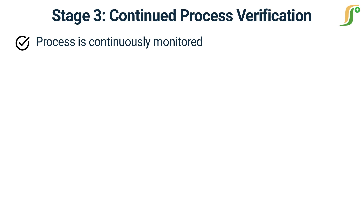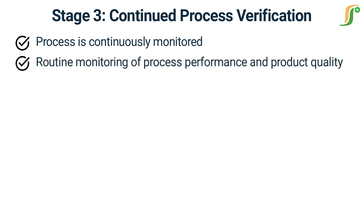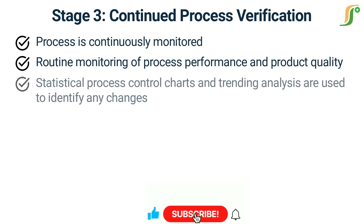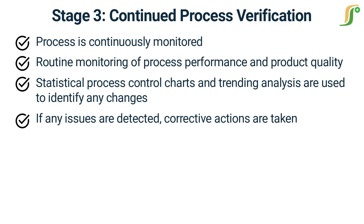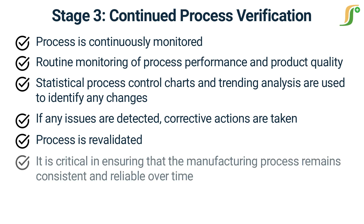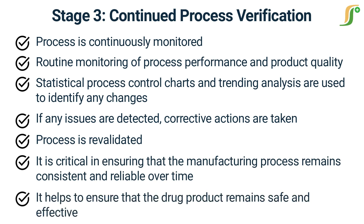In the third stage, after the manufacturing process has been validated, it is continuously monitored to ensure it remains in a state of control. This stage is called continued process verification. It involves routine monitoring of process performance and product quality to detect any trends or shifts that may indicate the process is not operating as expected. Continued process verification may include the use of statistical process control charts and trending analysis to identify any changes in the manufacturing process or the drug product that may affect its quality or consistency. If any issues are detected, corrective actions are taken to bring the process back into control, and the process is revalidated as needed.